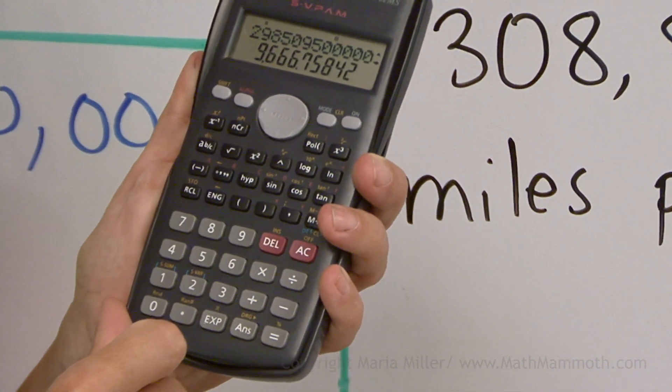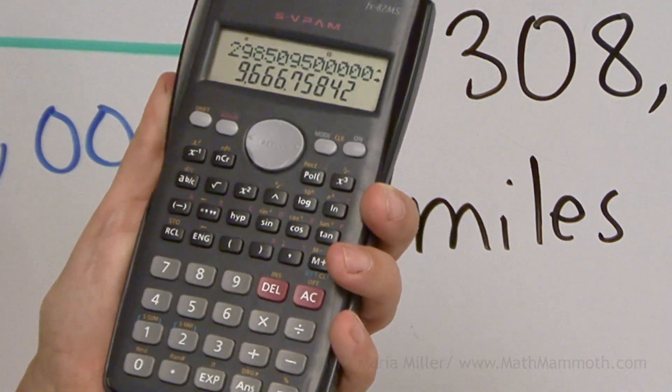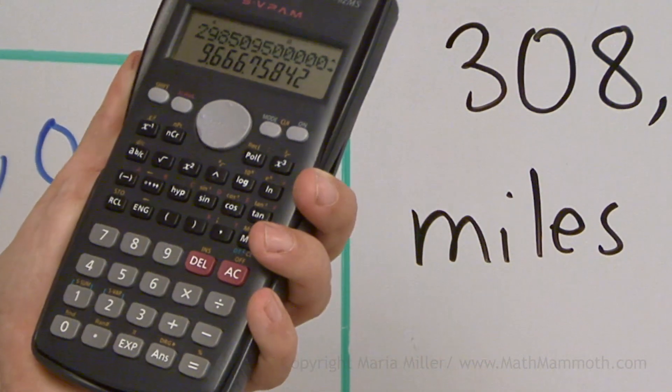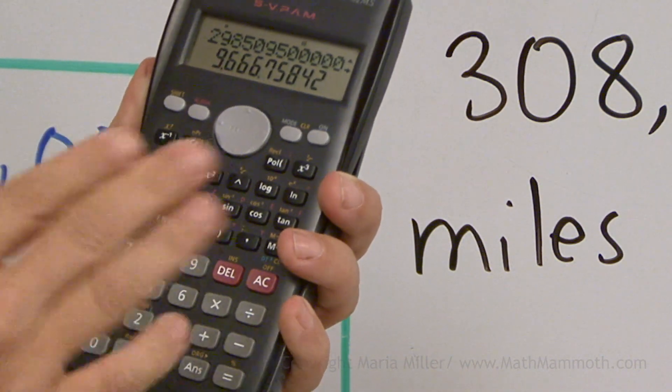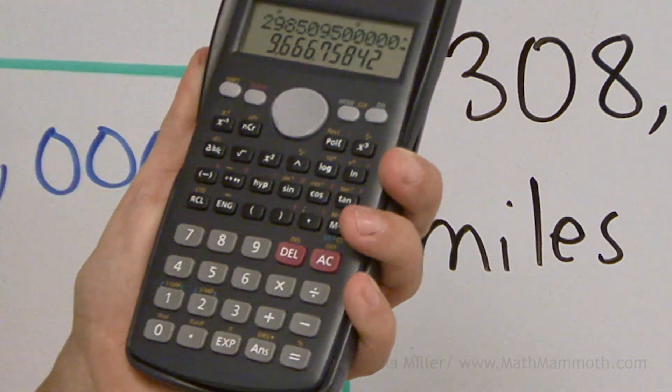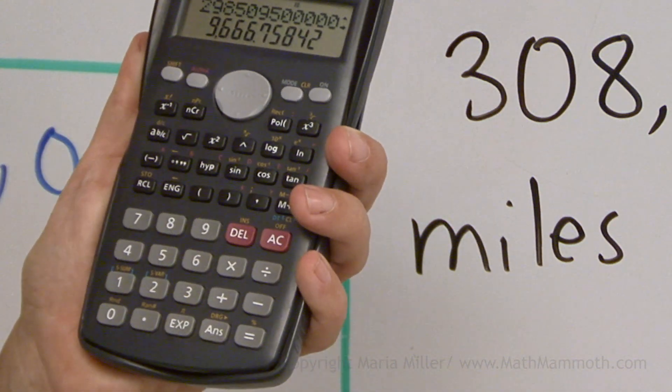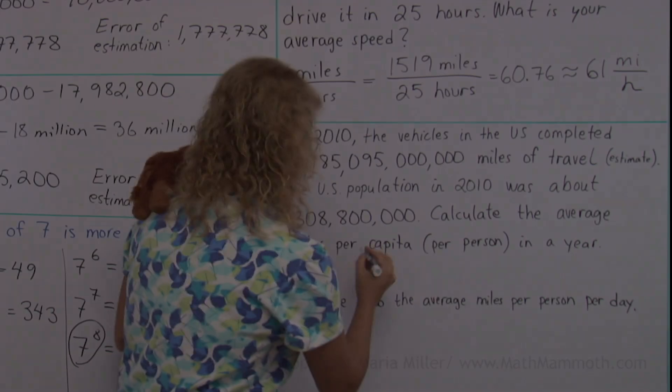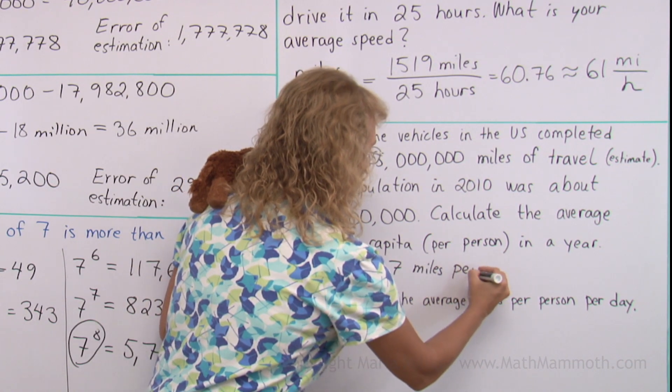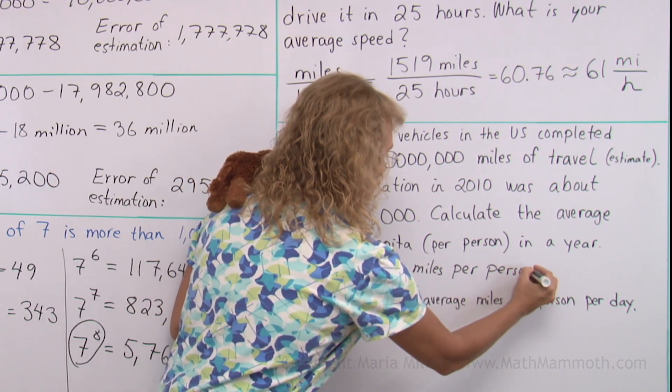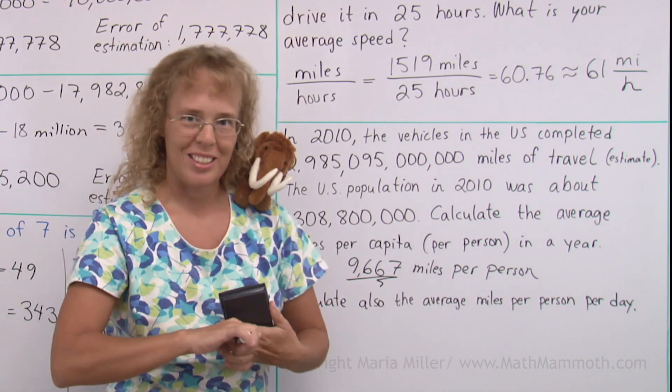I get a long decimal number here, but I'm going to round it to the nearest whole number. It shows me here 9,666 point something. And after the point is a 7, so I'll round up to 9,667. Every person in the US on average traveled that many miles in a year.